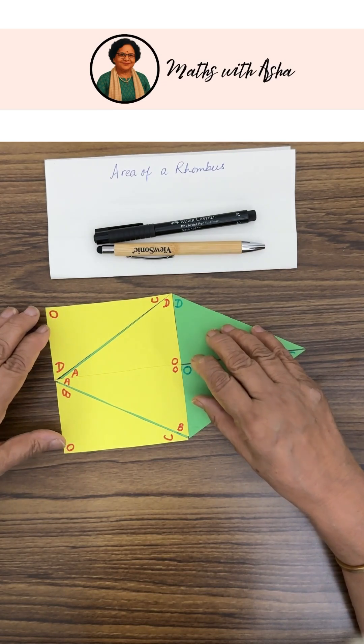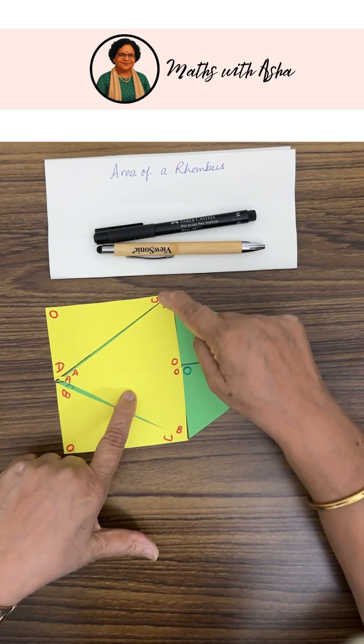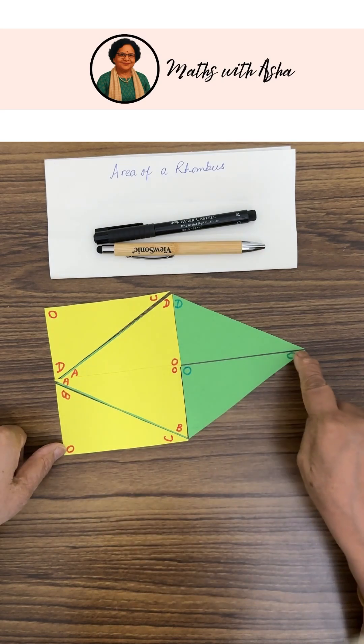So what do I get? I get a rectangle and what are the sides? One of the sides is BD which is one of the diagonals and the other is OC, and OC is half of the other diagonal.